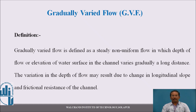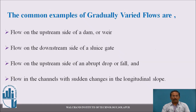The definition of gradually varied flow is: it is a steady non-uniform flow in which the depth of flow, or the elevation of the water surface level, varies gradually — that means very slowly — and the characteristics are changing very slowly over a long distance. The variation in depth may result due to change in longitudinal slope and frictional resistance of the channel. Gradually varied flow occurs near the upstream side of a dam, the immediate downstream side of a sluice gate, or on the upstream side of an abrupt drop or fall.